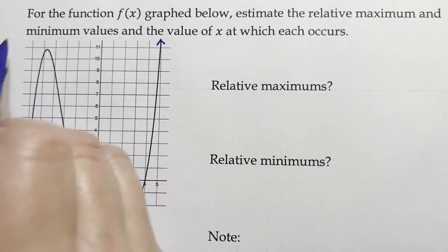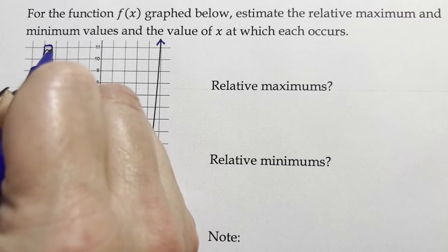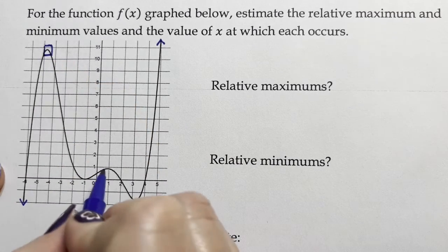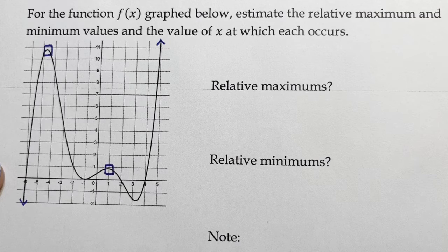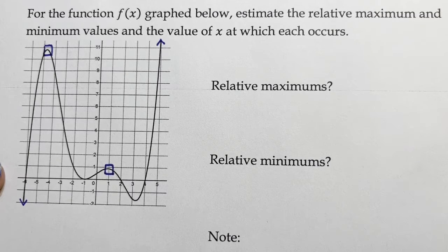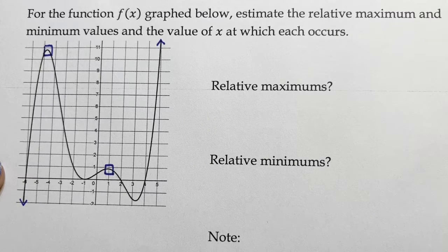But within this small little range, this is a maximum value, and so is this. We have two points which, within their small little grouping, if we zoomed in, they play the part of a relative max.